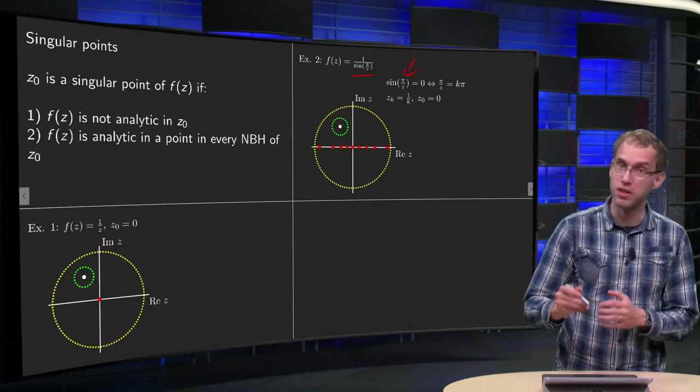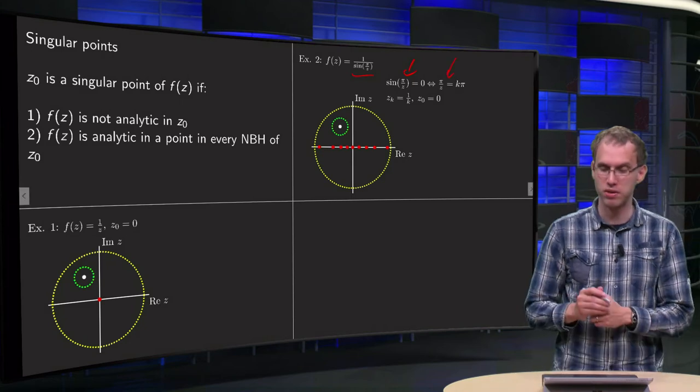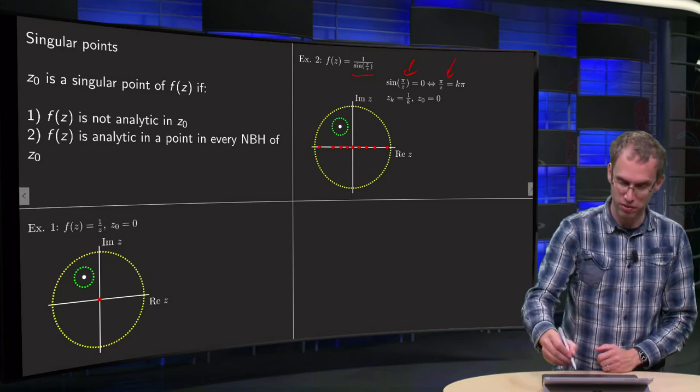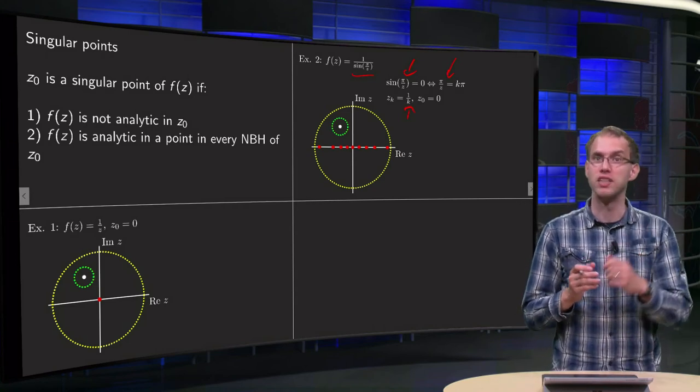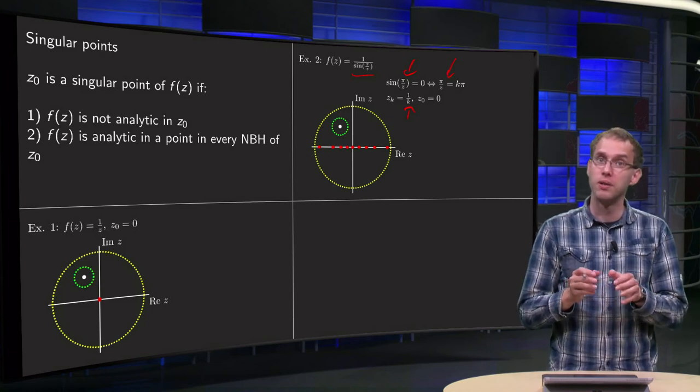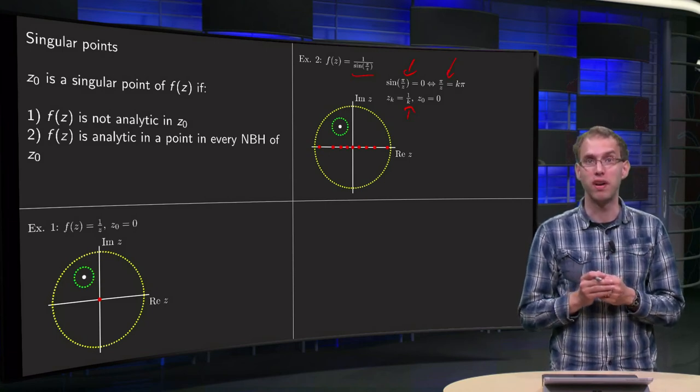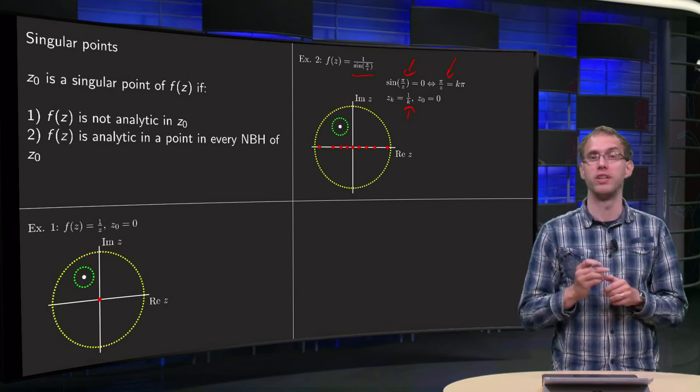And it happens if the argument of the sine equals a multiple of pi, so pi over z equals a multiple of pi. So if z equals 1 over k, where k is some number in Z, or z equals 0. So the points where the function is not defined are the red dots and they are all on the real axis.